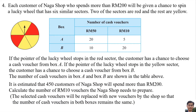Question 4: Each customer of Naga's shop who spends more than RM200 gets a chance to spin a lucky wheel with 6 similar sectors. Two sectors are red and the rest are yellow. If the pointer stops on red, the customer chooses a cash voucher from Box A. If it stops on yellow, they choose from Box B. The number of cash vouchers in each box is shown in the table. It is estimated that 450 customers will spend more than RM200. Calculate the number of RM10 vouchers Naga's shop needs to prepare, noting that selected vouchers are replaced.